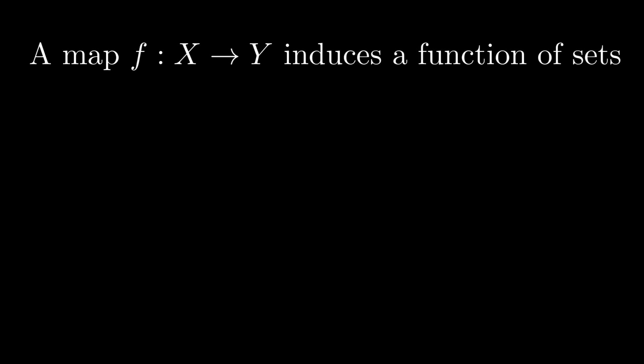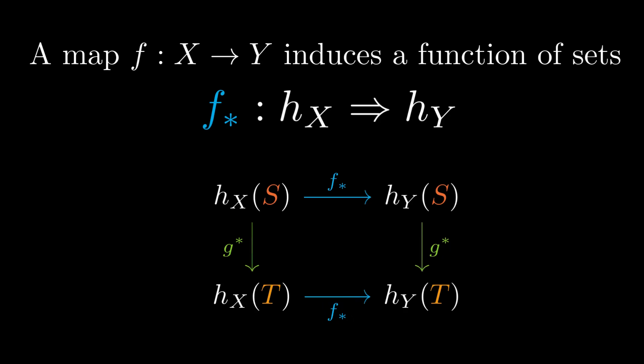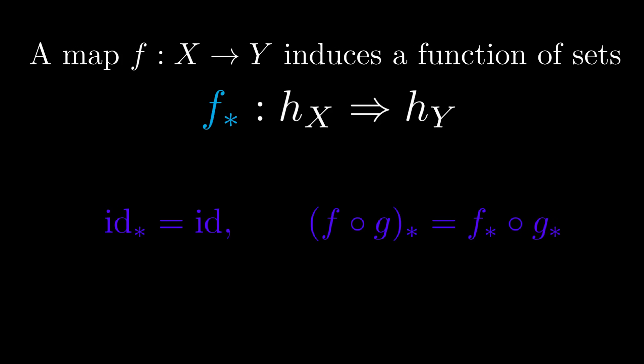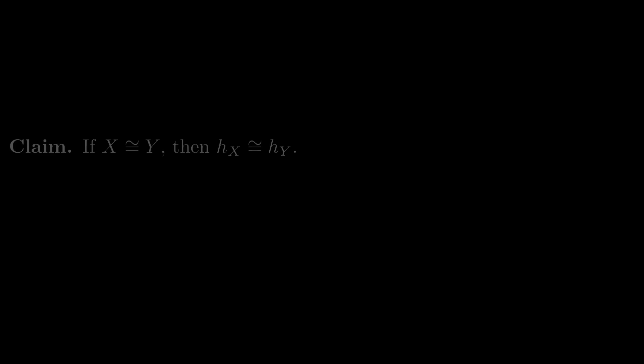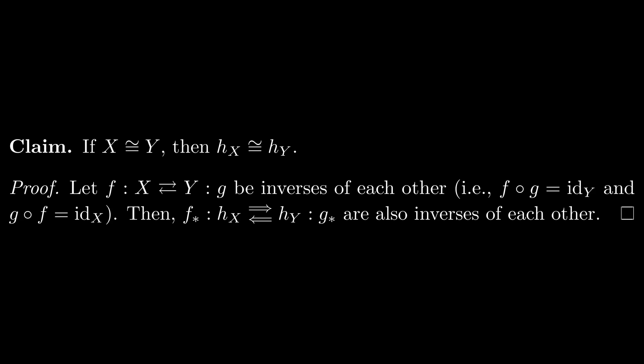If you reach deep into your short-term memory banks, you'll remember that a map f of objects from x to y induces a function of sets from s-shaped elements of x to s-shaped elements of y. A simple unwrapping of definitions shows us that this f lower star is indeed a natural transformation of pre-sheaves. After some other pedestrian checks, we arrive at the conclusion that, if x and y are isomorphic, then their corresponding pre-sheaves are isomorphic as well.